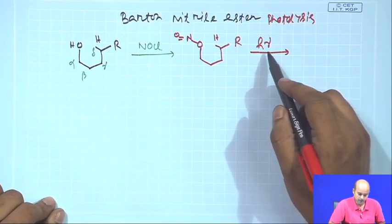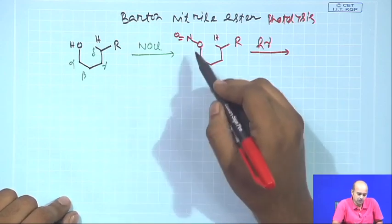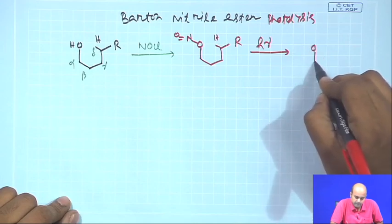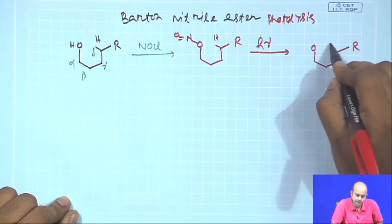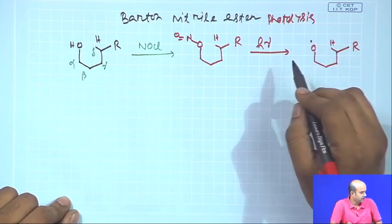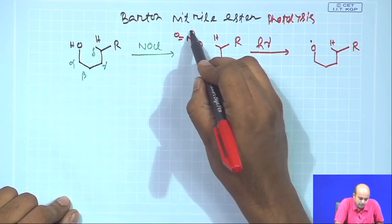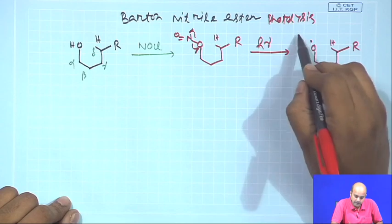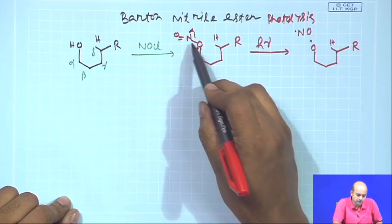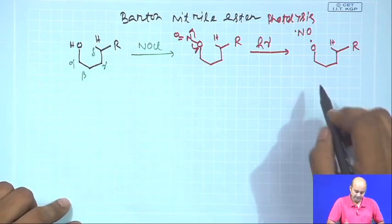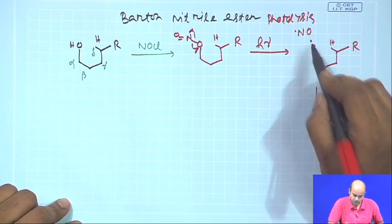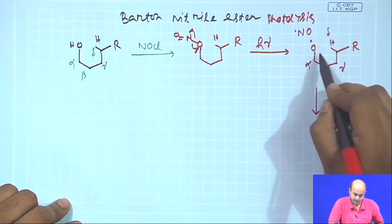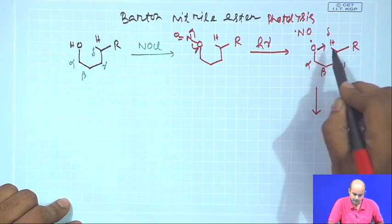This light will basically give you a homolytic cleavage of this O-N bond. Once this takes place, you get an O radical and you get an NO radical. This oxygen radical now abstracts the delta hydrogen - alpha, beta, gamma, delta - through a 6-membered transition state.